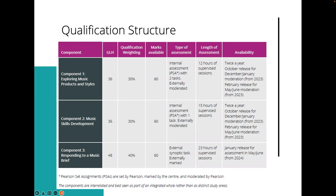These dates are important when planning your course. For example, looking at component one: if it's released in October and the assessment needs to be finished and ready to send to your moderator in December/January, you might not be able to get 36 guided learning hours in during that first year. So component one might mean looking at a May/June window. These are considerations you'll need to take into account when looking at the structure of the qualifications.